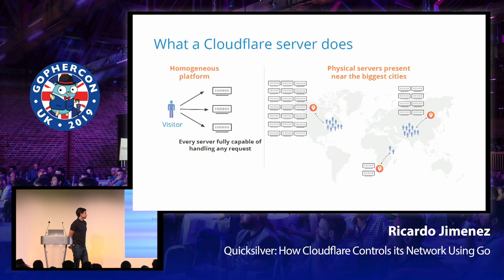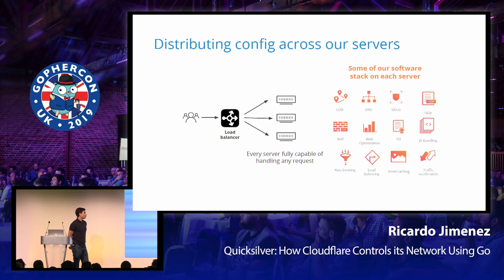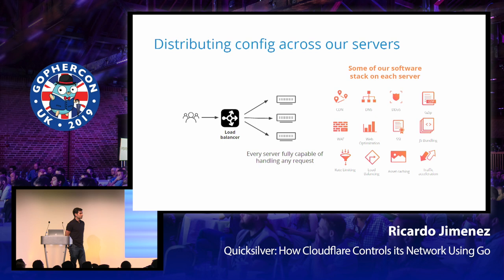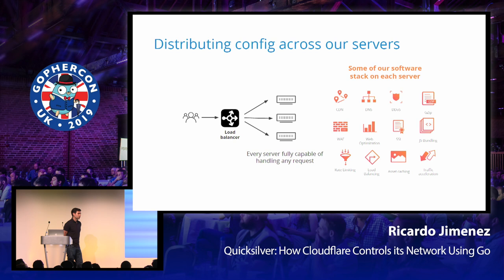When a visitor goes to a website behind Cloudflare, it hits one of our servers and that server takes care entirely of processing that request. For that, given how our platform works, we need to install the same software stack in each one of our servers. Our servers run really hot with many software components at the same time — software for CDN logic, responding DNS queries, attack mitigation, compressing content on the fly, web application firewall, and all the features we offer. Any server can perform any task.